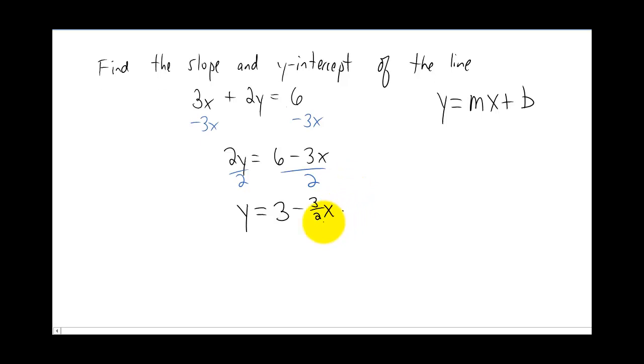Now, we have the equation of our line in a form that looks pretty close to the y equals mx plus b. The only difference is the order of these terms on the right side. Fortunately, because these two terms are added, we can just switch them. As long as we keep the signs the same, we're okay. So fortunately, we can write this line in the form y equals negative three halves x plus three.